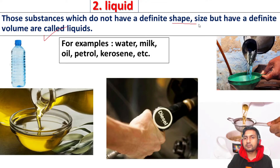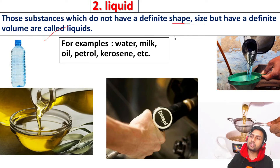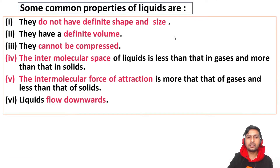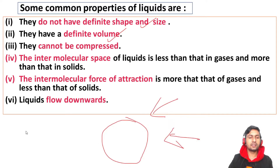For liquids, the volume is fixed but the shape is not. Liquids can be measured in 1-liter, 2-liter, 3-liter, or half-liter quantities. Examples include water, milk, oil, petrol, and kerosene. Liquids have a definite volume but cannot be compressed easily. The intermolecular space of a liquid is less than that in gas but more than that in solid.